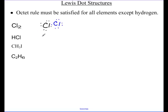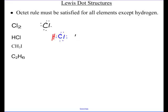Now HCl. I've got a Cl here with its 7 valence electrons, and here's hydrogen with its one valence electron. Look at that — they make a nice little bond, forming HCl. Hydrogen has 1 and 2 electrons — it's happy. Chlorine has 2, 4, 6, and 8 — it's happy too.